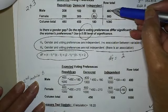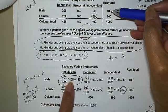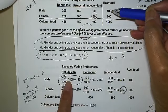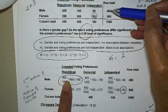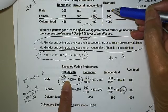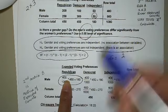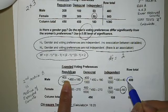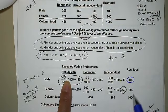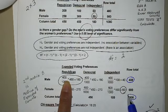So to come up with the expected counts, I have to take my row total. So I'm interested in this cell, let's say, right? I'm interested in the expected count for Republican and male. So I'm going to take my row total, which is 400.